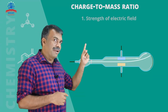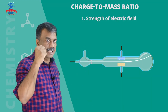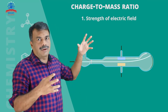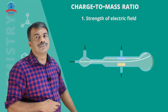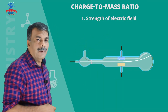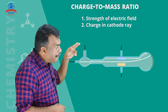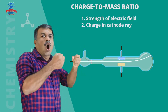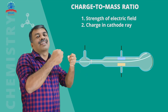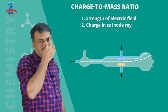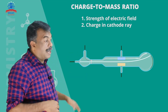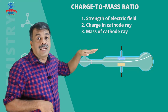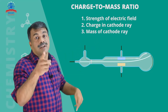The deflection depends on several factors. One is the electric field strength — the electric field causes deflection. Second is the quantity of charge in the cathode rays. And if you look at the mass of the particle, the greater the mass, the less the deflection.